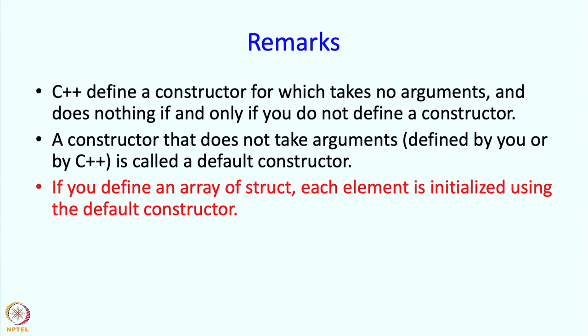If you define an array of struct, each element is initialized using the default constructor. If you want to construct an array of a certain kind of struct, then you had better have a default constructor. Now, if you define a constructor, then C++ does not define a constructor. If you define a two argument constructor, then C++ will not even define a zero argument constructor.